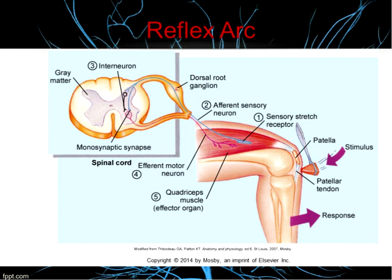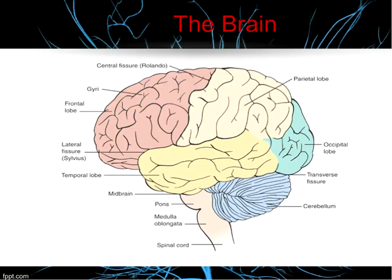This is a reflex arc — the picture is taken from your book — showing the elements of a reflex arc. Moving on to the brain, the brain is divided into the cerebrum, the cerebellum, and the brain stem. The cerebrum consists of two hemispheres — a right and a left — and also contains the thalamus, the hypothalamus, connections for cranial nerves 1 and 2, and the basal ganglia.